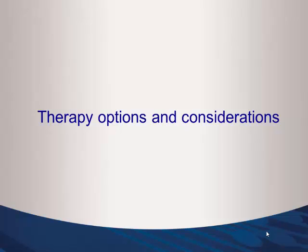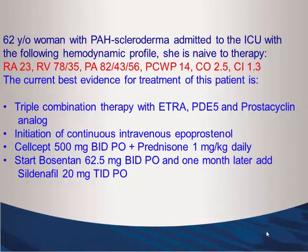Moving to therapy options: a 62-year-old woman with PAH scleroderma admitted to the ICU, naive to therapy. Her cath numbers: right atrial pressure 23, right ventricular pressure 78/35, pulmonary artery pressure 82/43 with mean of 56, wedge of 14, cardiac output 2.5, cardiac index 1.3. The current best evidence for treatment options listed include triple combination therapy with an endothelin receptor antagonist, PDE5 inhibitor, and prostacyclin analog, or initiation of continuous intravenous epoprostenol.